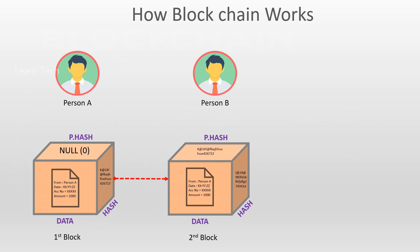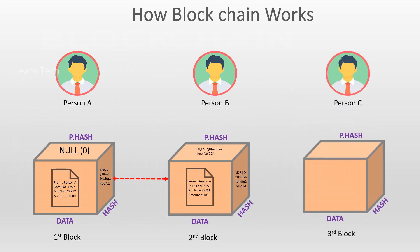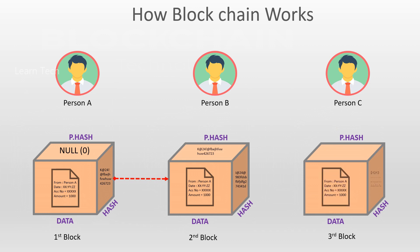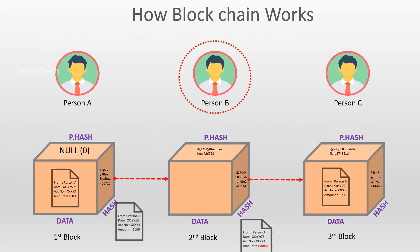We save the first transaction. As I said, we take the previous hash value from the prior block, add the data part, and generate a unique hash value. Now, suppose a hacker comes in — he can try to change the block information.